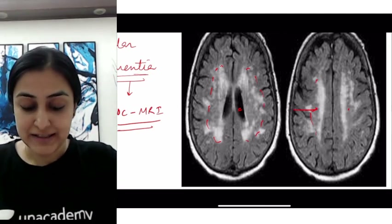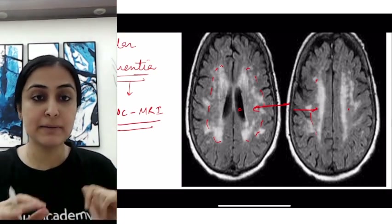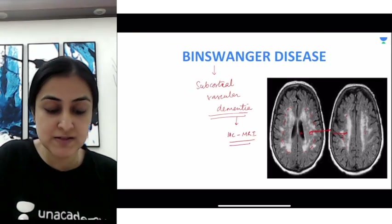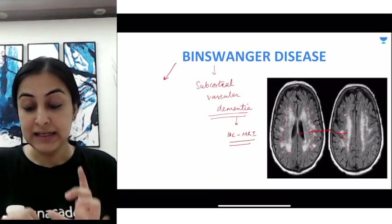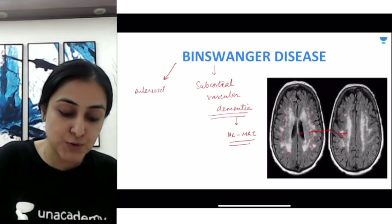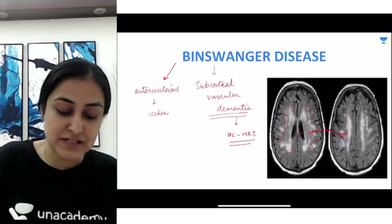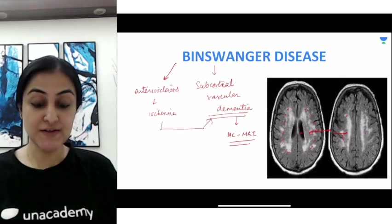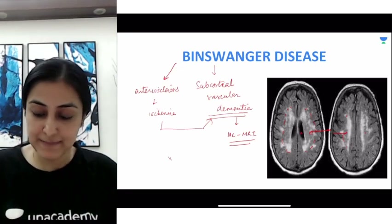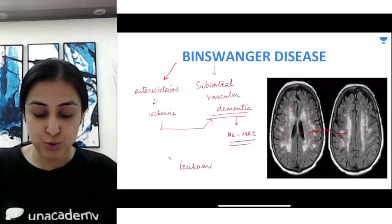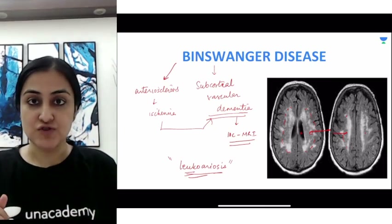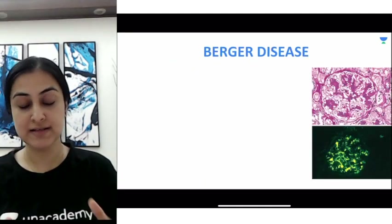These hyperintensities represent ischemic demyelination due to small vessel disease. In Binswanger disease, the smaller vessels undergo arteriosclerosis, causing narrowing that leads to ischemia of the white matter, resulting in vascular dementia. This entire process is called Binswanger disease, and sometimes these changes are referred to as leukoaraiosis — white matter changes from demyelination.